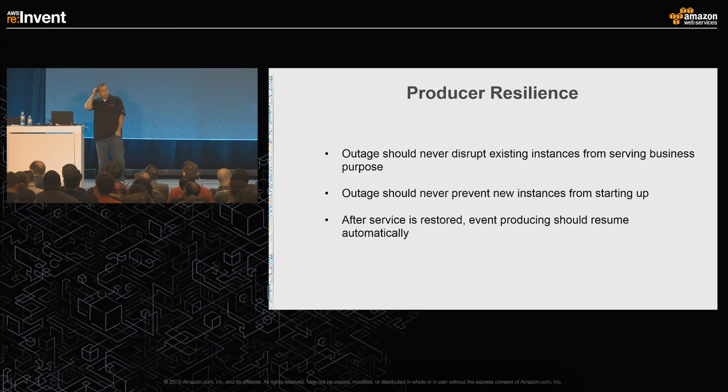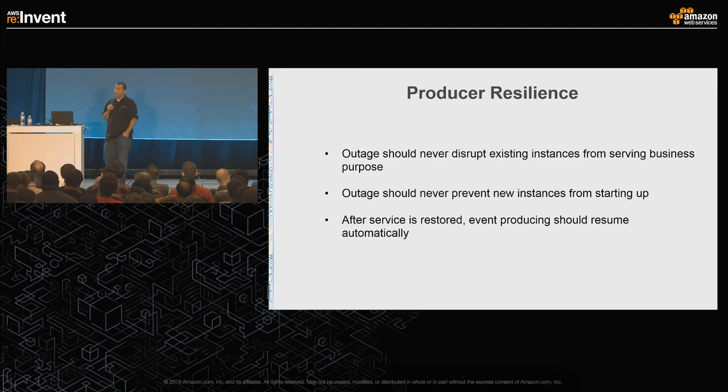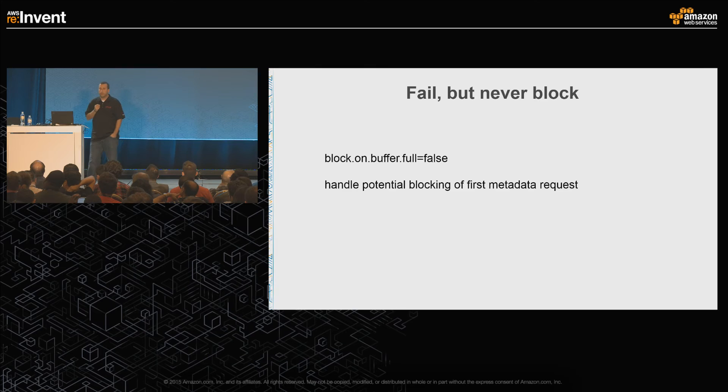A couple of things we're doing at the producer level. Our philosophy is that if our service is down, we should never stop what that instance is serving — we should have no impact. If our service is not available, we shouldn't keep other services or new instances from coming up. And when we are restored, it should automatically start sending events back. Fail, but never block.